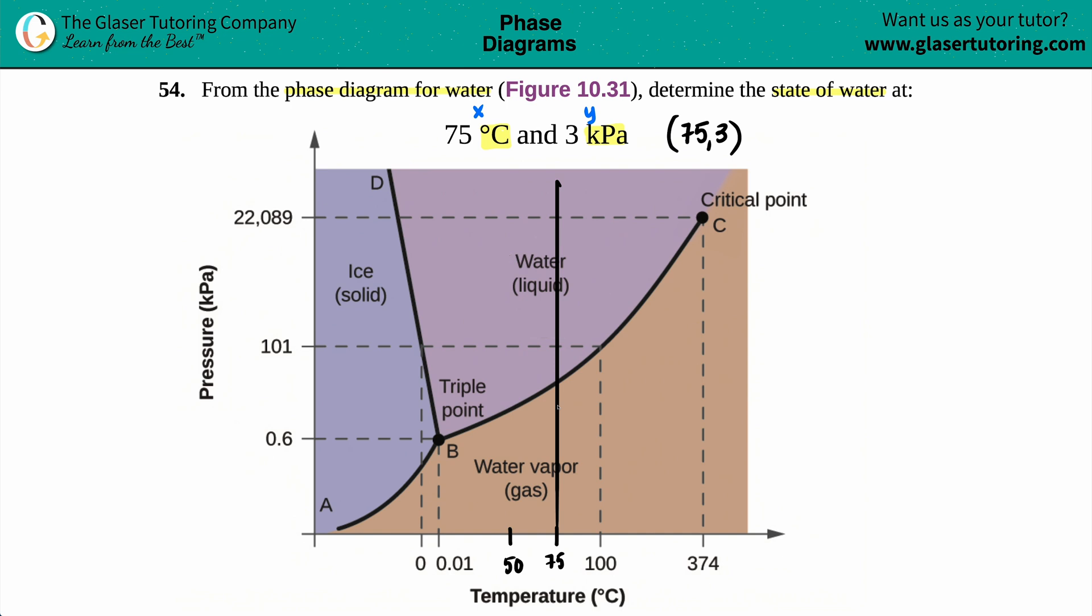Now we just have to find 3 kilopascals. I see that I have 0.6 and then from there I have 100, so we have a lot of room here. Probably 3 would be pretty close to 0.6, maybe 3 is like right here somewhere. So I would scoot over and bada bing bada boom, there it is, that's where they intersect.